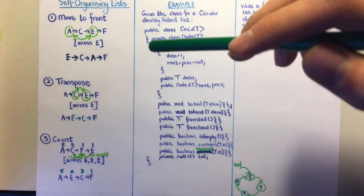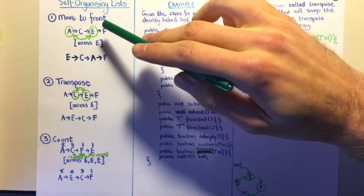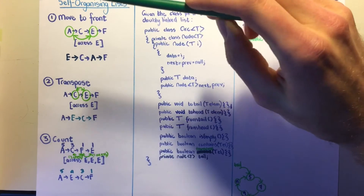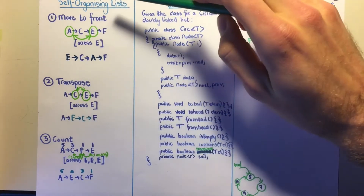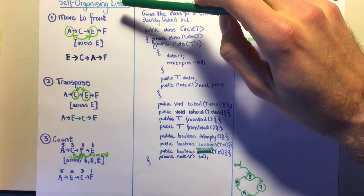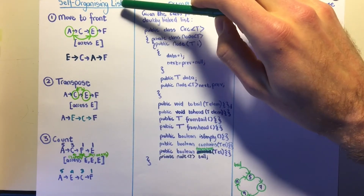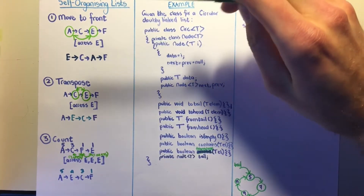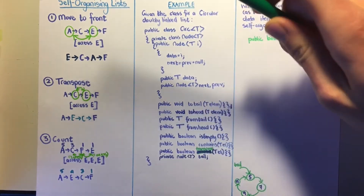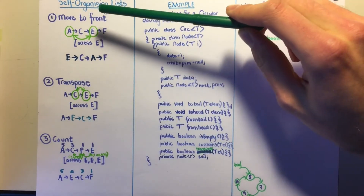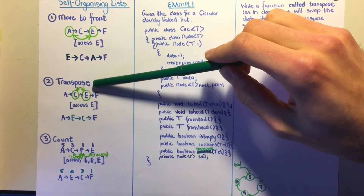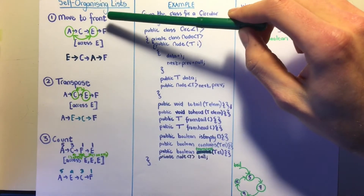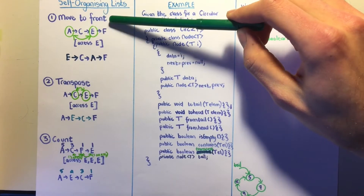In this video we will be looking at self-organizing lists. Self-organizing means the list organizes itself. There are three basic methods: move-to-front, transpose, and count.